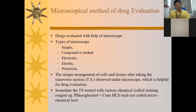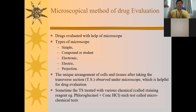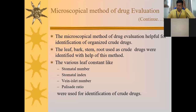Sometimes the transverse section is treated with various chemicals called staining reagents, which you have already covered in practicals. These reagents are used for staining the chemicals present in the cellular arrangement of the transverse section. For example, phloroglucinol plus concentrated HCl in 1:1 proportion is used for the staining of lignified cells. This is called the microchemical method.